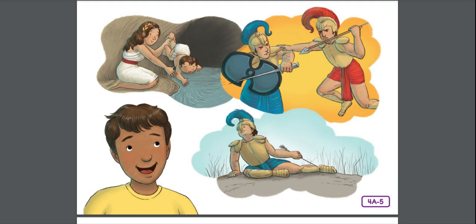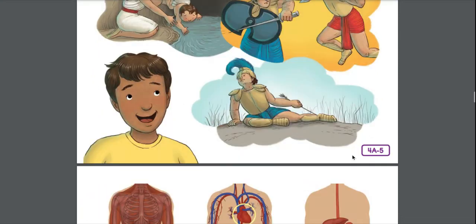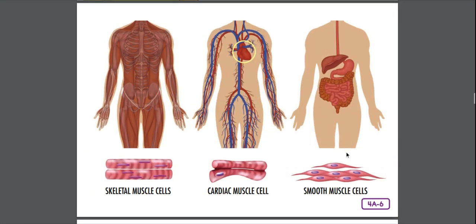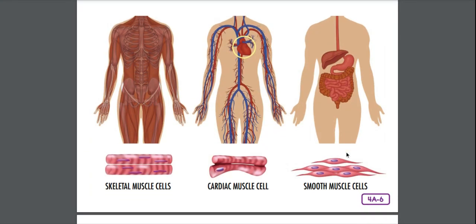From then on, people have referred to their own area of weakness as their 'Achilles heel.' It's a shame he wasn't wearing armored footwear — but it's only a myth. Let's move on and learn about other types of muscles in your body. In addition to skeletal muscles, you have smooth muscle and cardiac muscle.